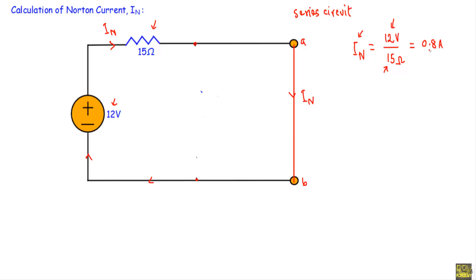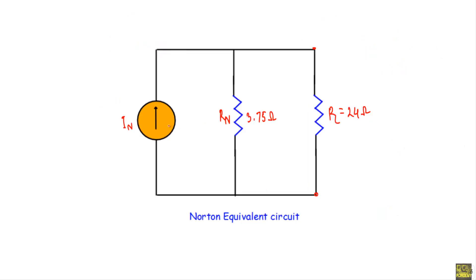We calculated the Norton current as a positive value of 0.8 amperes. When the Norton current is positive, the direction of the Norton current source I_n is in the upward direction; if it were negative, the direction would be downward. Since I_n is positive with a magnitude of 0.8 amperes, the Norton current source points upward, giving us the complete Norton equivalent circuit of the given network.